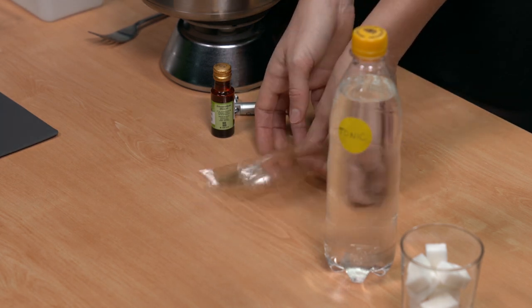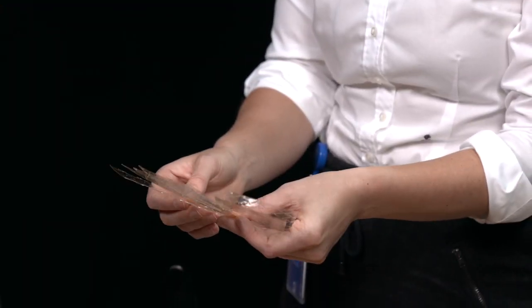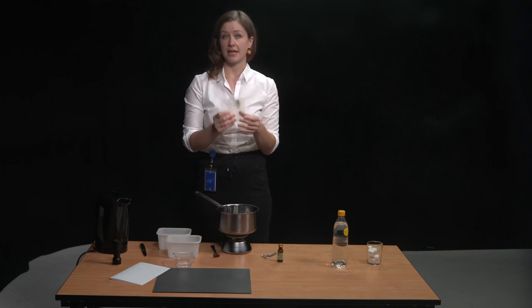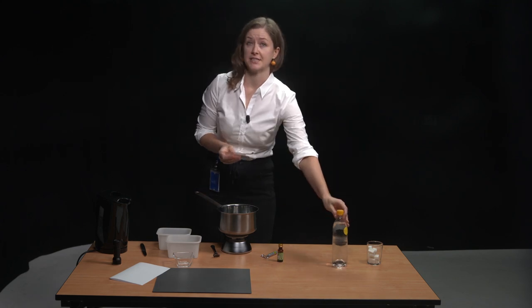Okay, first you need to check the instructions on your gelatin to find out how much liquid it can turn into jelly. But then use at least double the amount. So I use 10 grams, six sheets for half a liter of liquid.